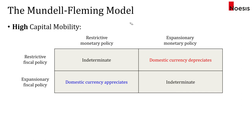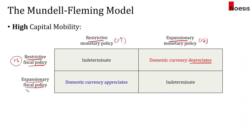If we combine these permutations of the policies, we can see that under high capital mobility, when we have an expansionary monetary policy where interest rates are low, and a restrictive fiscal policy where interest rates are also low, the domestic currency will depreciate. In the case of a restrictive monetary policy where interest rates are high, and an expansionary fiscal policy where interest rates are high as well, then the domestic currency will appreciate.